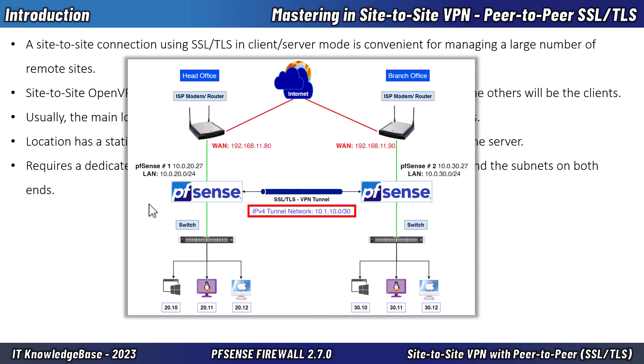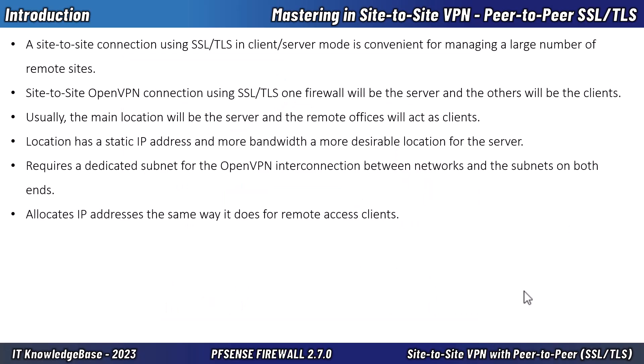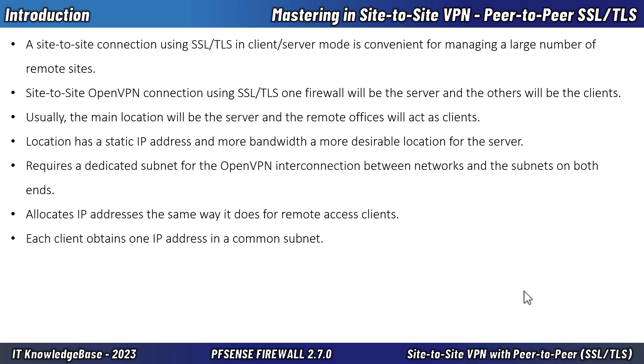The figure depicts this layout using 10.1.10.0/30 as an IPv4 SSL/TLS VPN tunnel network. This can be any subnet so long as it does not overlap another subnet currently in use. OpenVPN allocates IP addresses the same way it does for remote access clients. When using a topology style of subnet, each client obtains one IP address in a common subnet. When using a topology style of /30, each connecting client gets a /30 subnet to interconnect itself with the server.